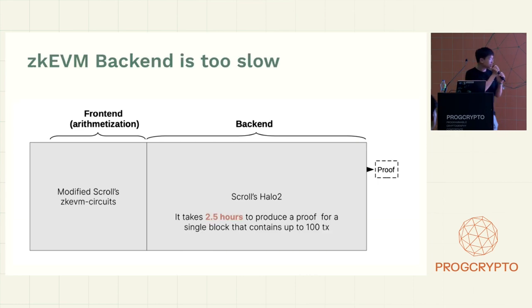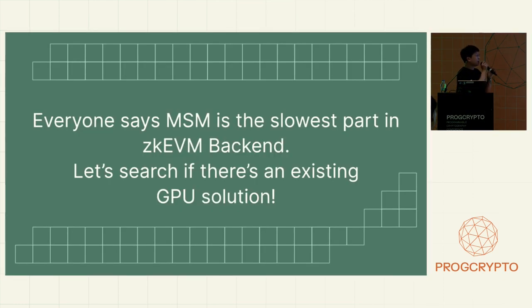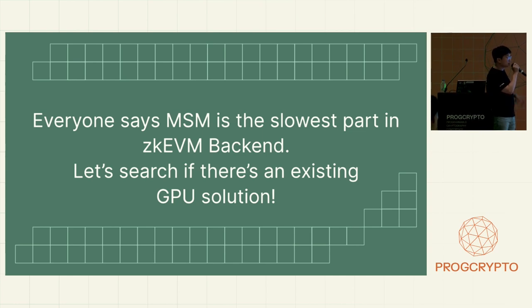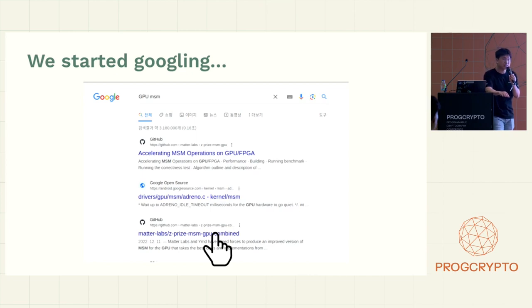The problem is it takes 2.5 hours to produce a proof for a single block that contains up to 100 transactions — quite long. Everyone has been saying that MSM is the slowest part in the zkEVM back-end. So let's search if there's an existing GPU solution.